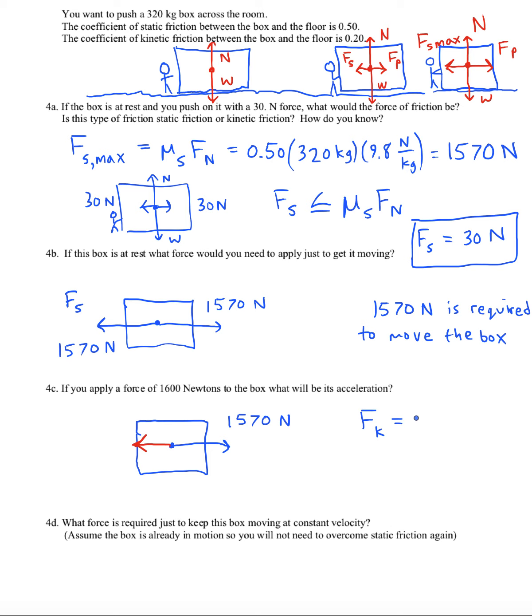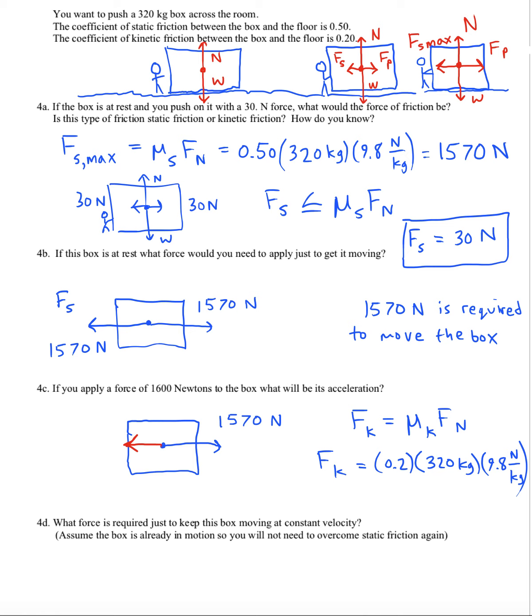And that doesn't change. It's just one formula, mu k times fn here. So plug in our 0.2. Our normal force will be 320 times g. 630 newtons.